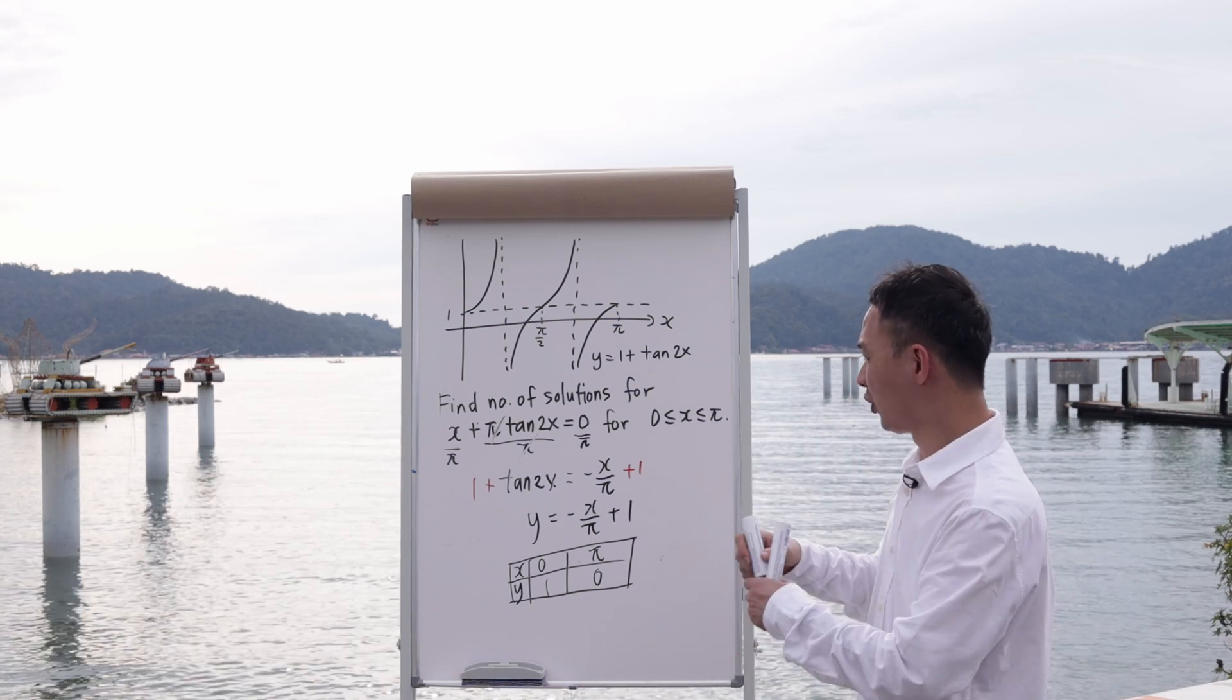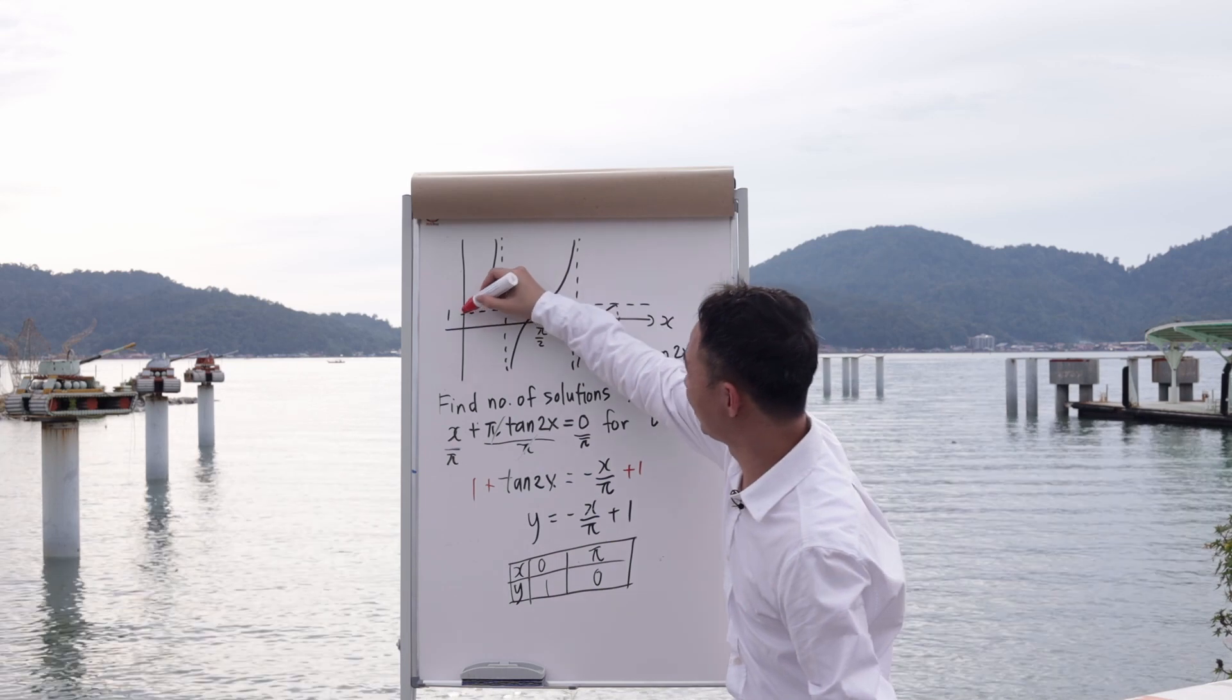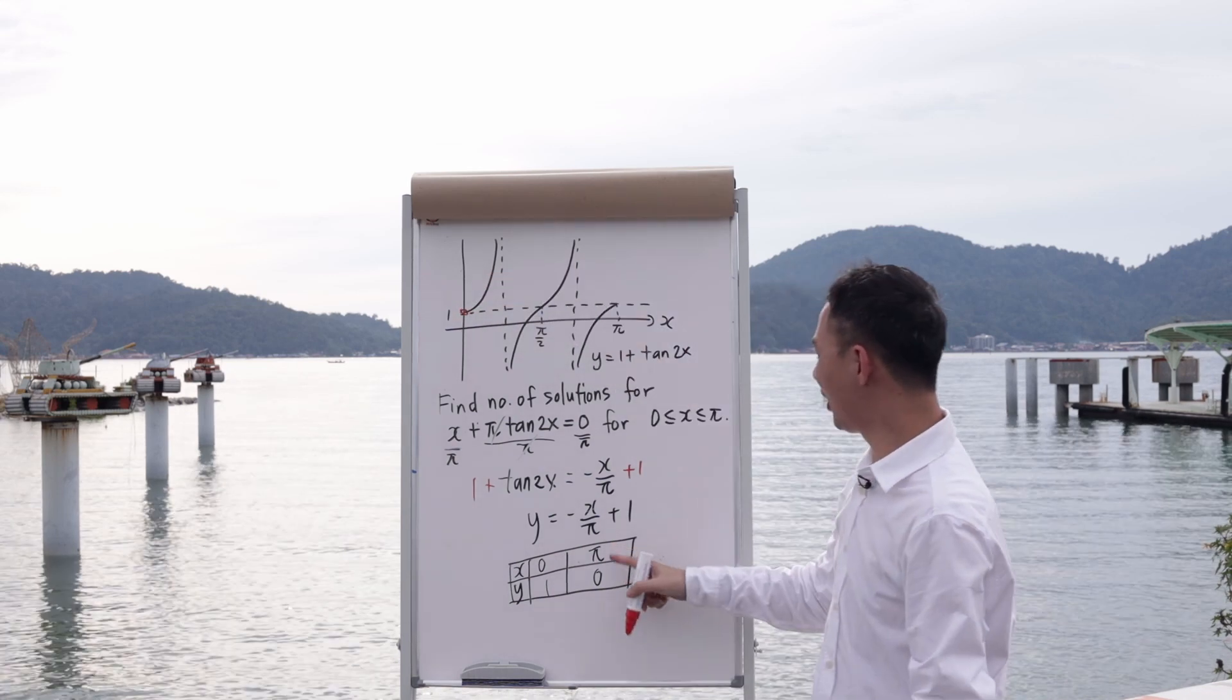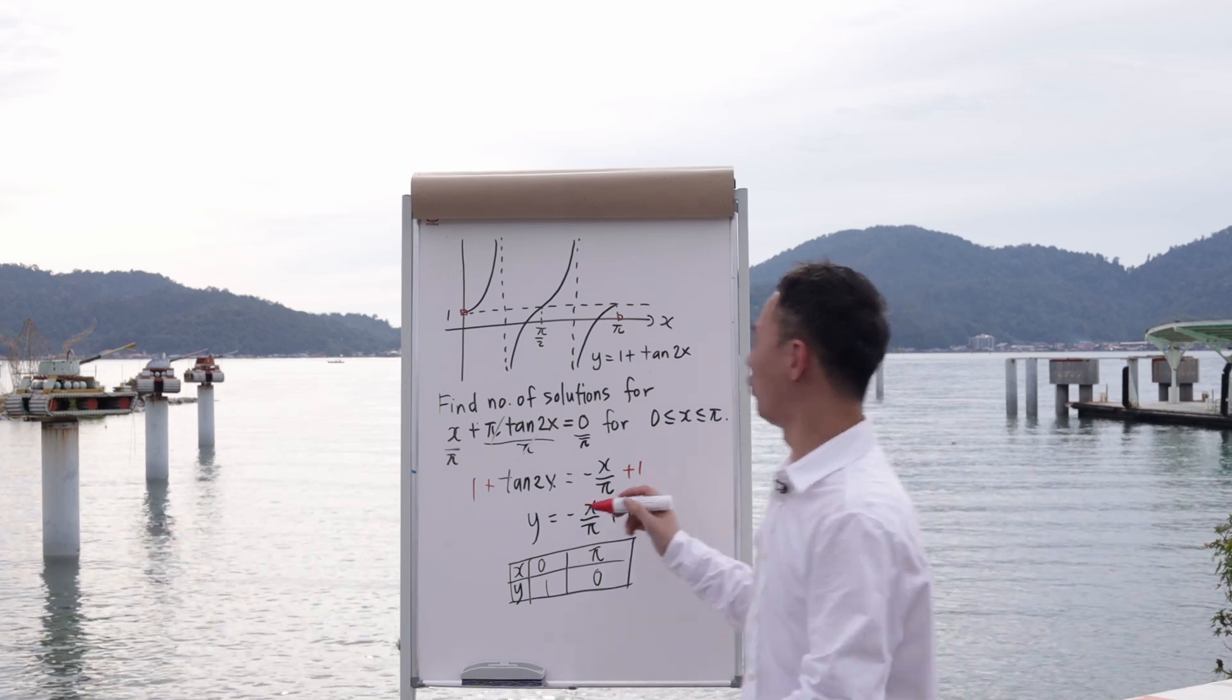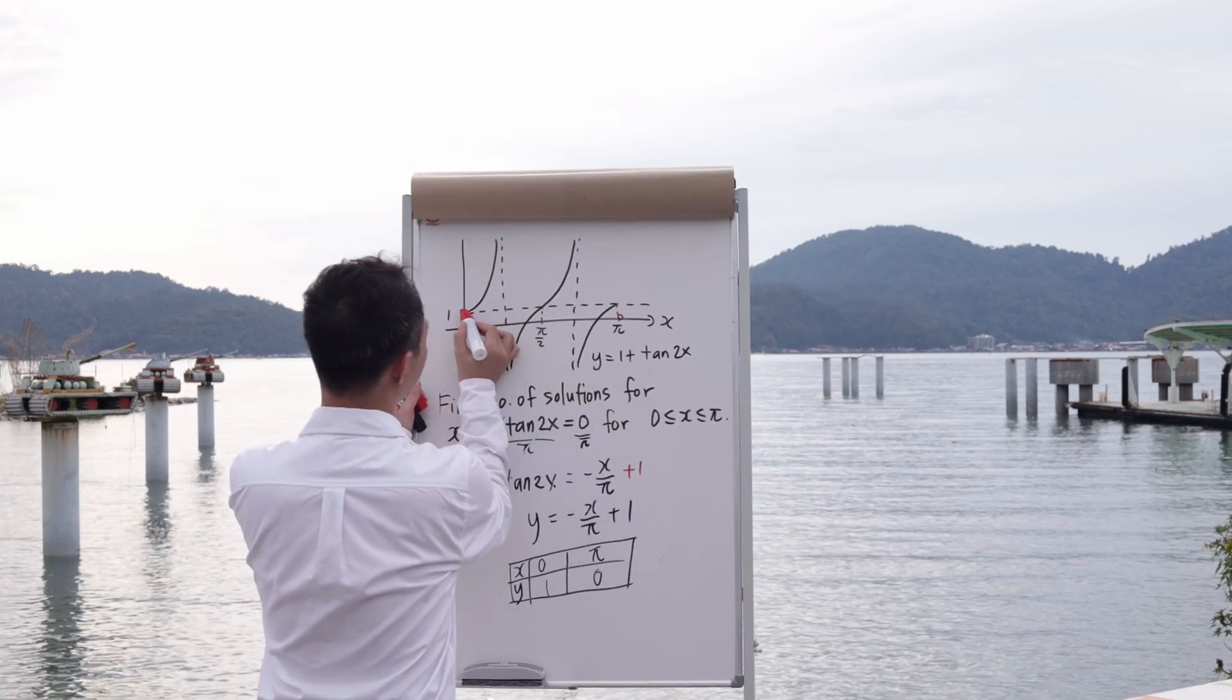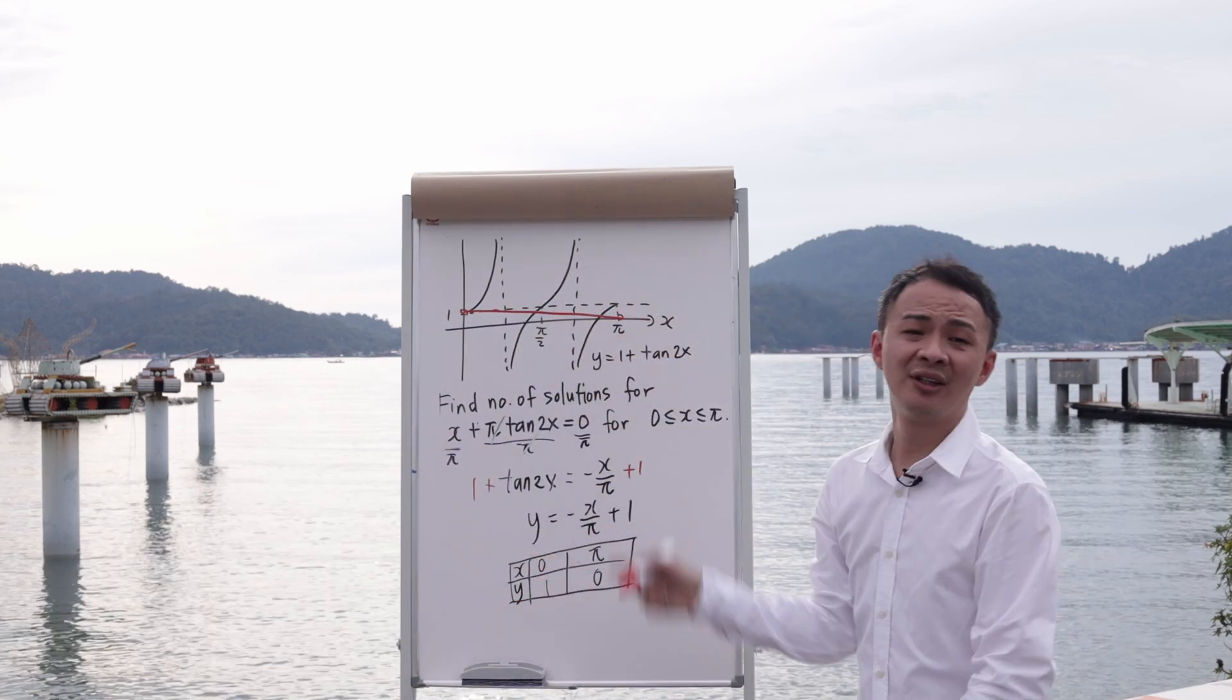Then I will plot these two coordinates at the graph here. So which is (0, 1), which is this coordinate here, and then another one is (π, 0), which is here. And then what I want to do is I will need to draw a straight line for it.